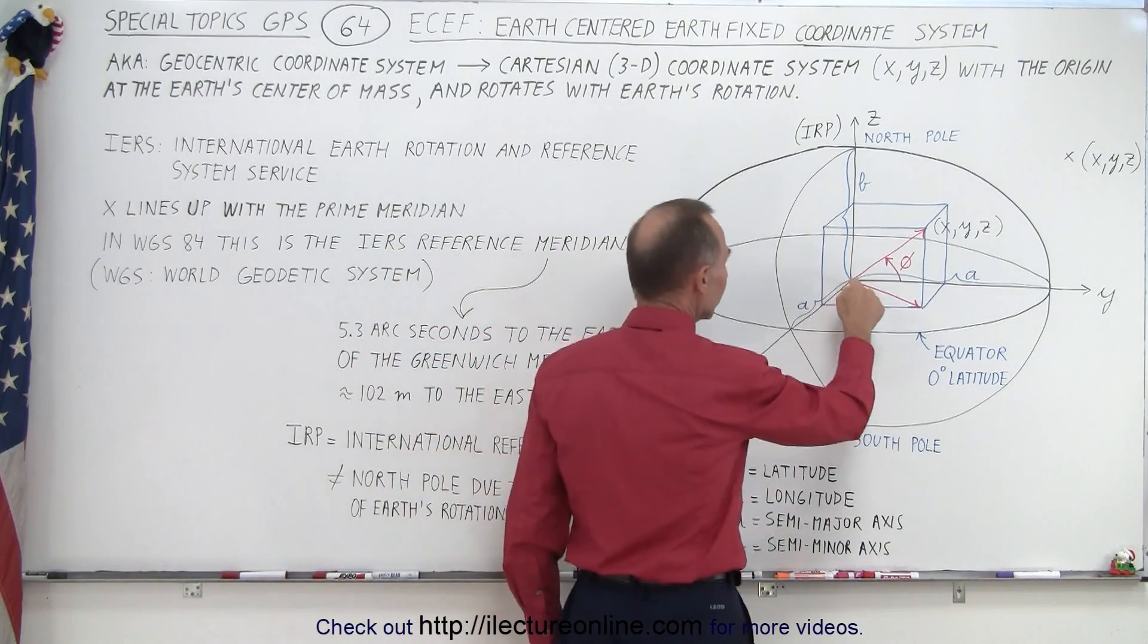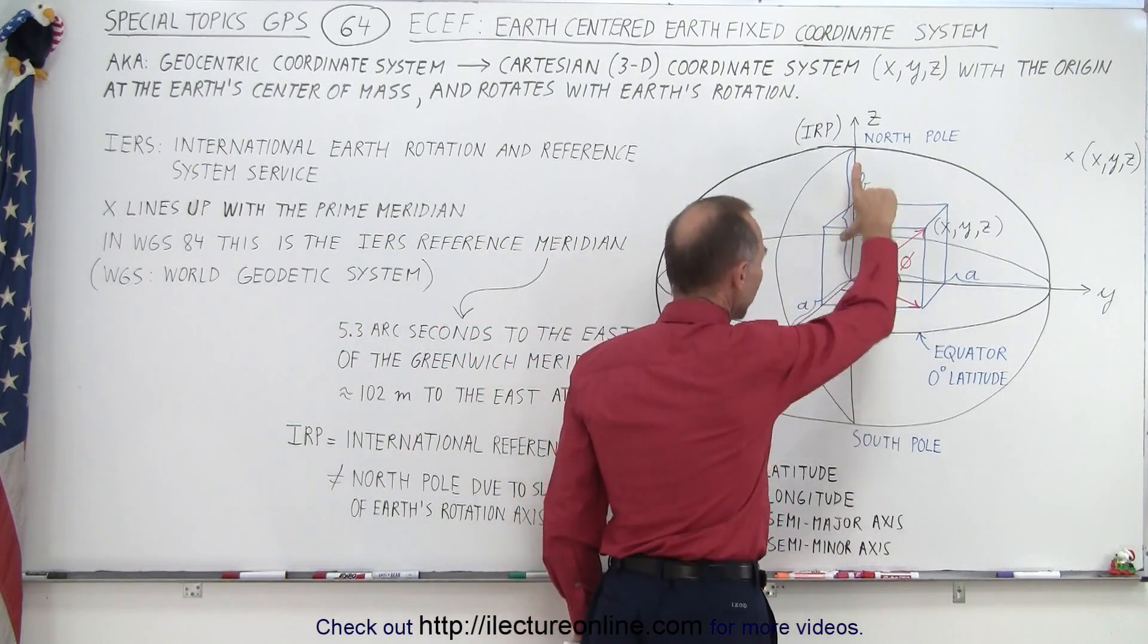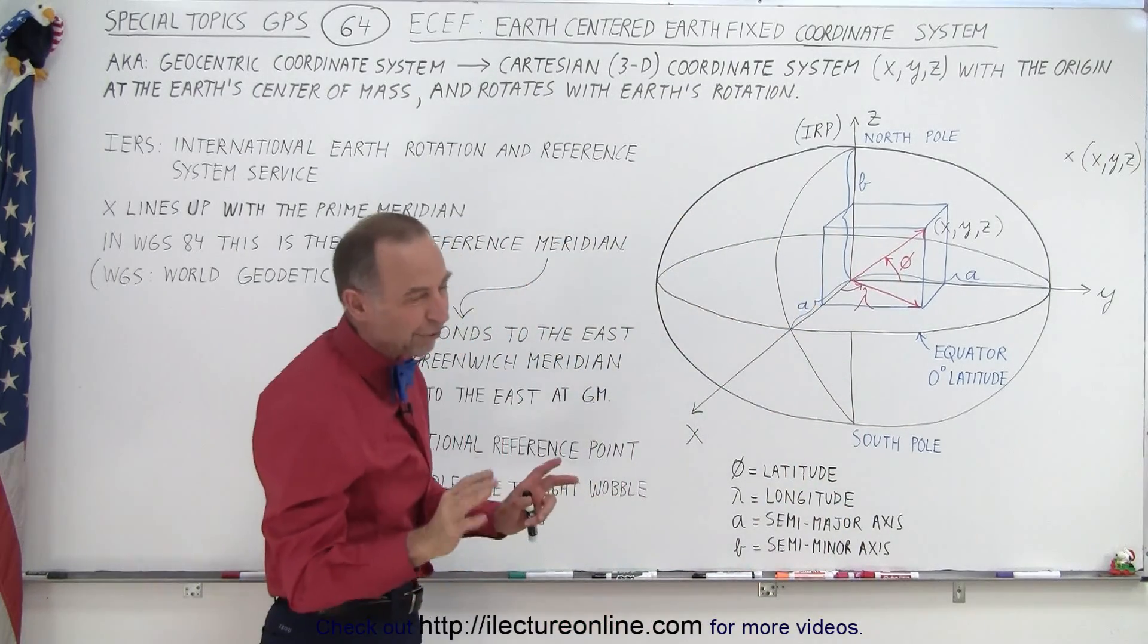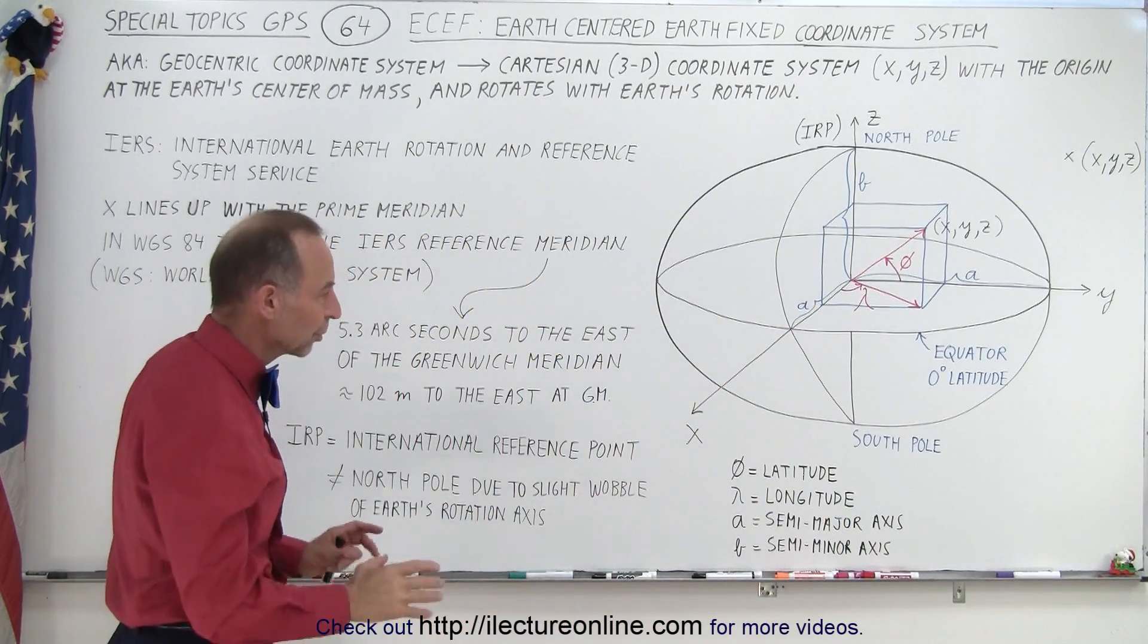Then the distance from the center of the earth to the poles, that is what we call the semi-minor axis, and there's a difference of about 21 kilometers between the two.